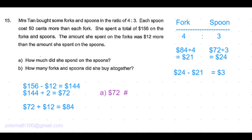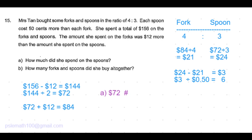We know that the cost of one spoon is 50 cents more than one fork. So that's 3 dollars divided by 50 cents, equal to 6 forks or spoons in each part.